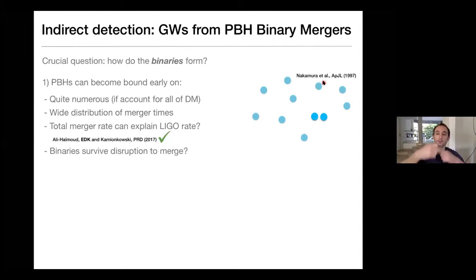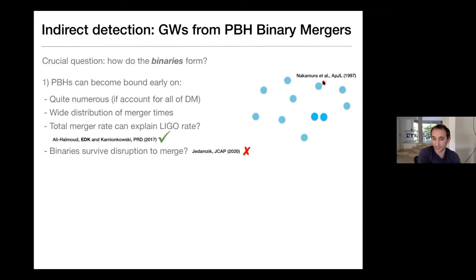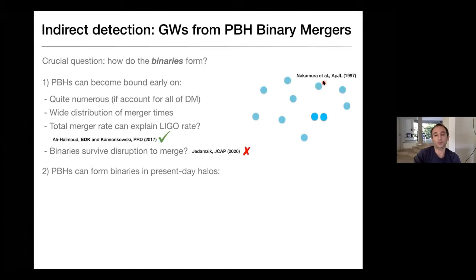However, there was a question of whether these binaries survive all the way until they merge. From the moment they become bound and find themselves in an inspiraling orbit, whether they are disrupted by interaction with a third primordial black hole or with the rest of dark matter. A recent paper by Carson Jadamczyk found that they actually did not survive — a third body keeps coming in and the binaries are exchanged. As they are exchanged, the orbit becomes more circular and they never merge in time.